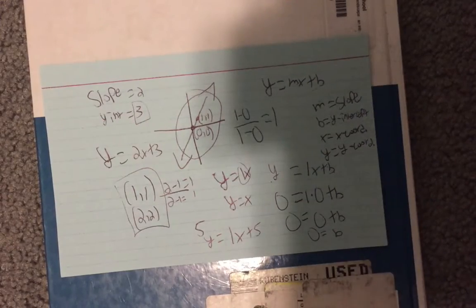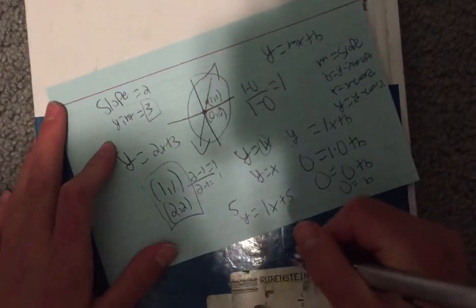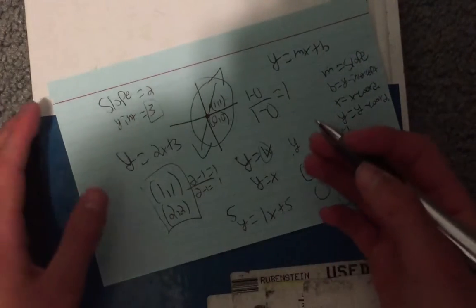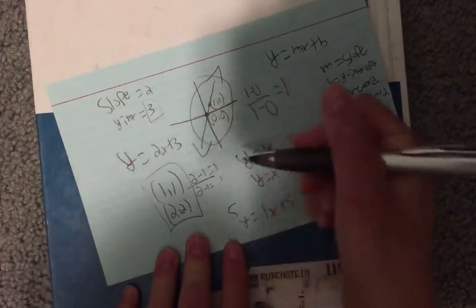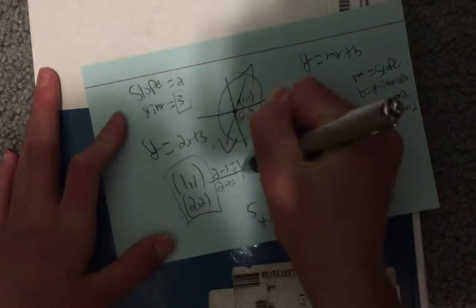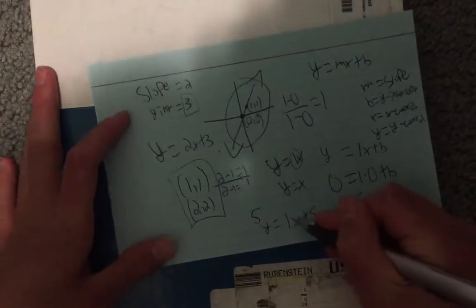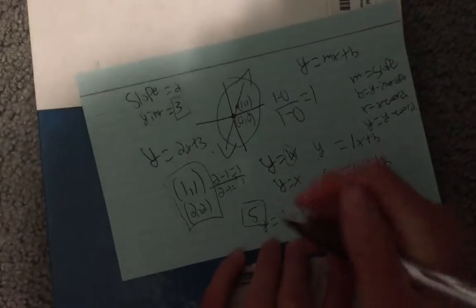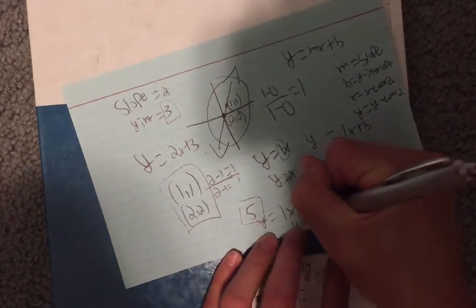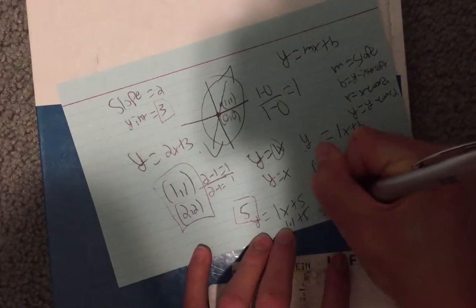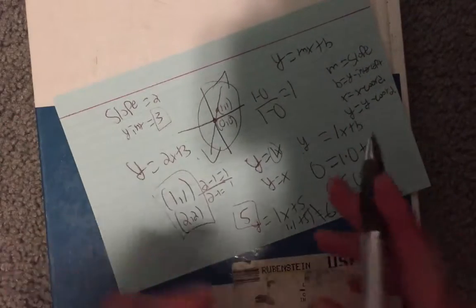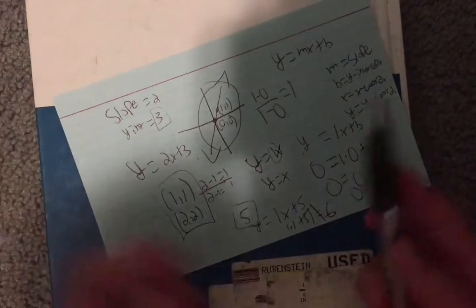A math problem would not give you points and a y-intercept, because those two don't correspond. For example, let's use the points one, one, and two, two. So I found the slope, which is one over one, which is one. One x plus five, because they said that your y-intercept is five. If you were to plug one of those in to check it, one times one plus five, that's six equals one. That doesn't equal. So that's impossible to do.